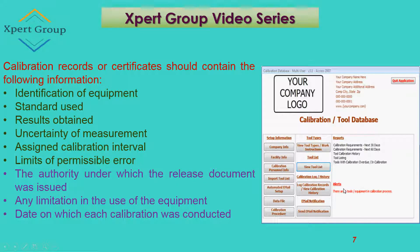Third, results of the calibration. Fourth, the assigned uncertainty of measurement — if any ambiguities are found during calibration, the calibration uncertainty must be noted in the record. Fifth, the assigned calibration interval — whether the next calibration is due in 30 days, 60 days, or one year. Sixth, the limits of permissible errors — some tolerance should be noted if allowed by the manufacturer, and this must be contained in the documentation.